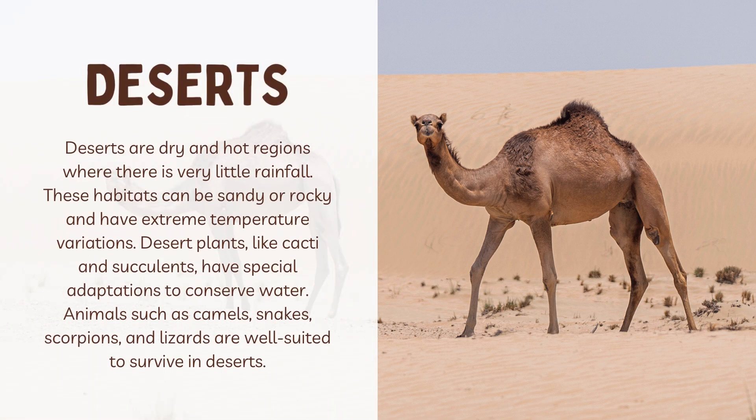Deserts are dry and hot regions where there is very little rainfall. These habitats can be sandy or rocky and have extreme temperature variation. Desert plants like cacti and succulents have special adaptations to conserve water. Animals such as camels, snakes, scorpions and lizards are well suited to surviving in deserts.